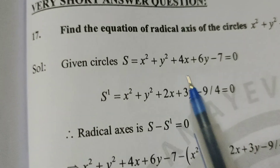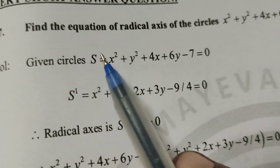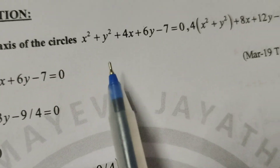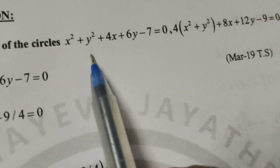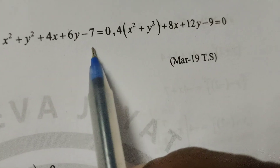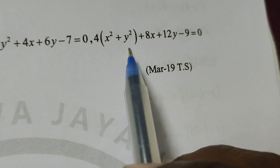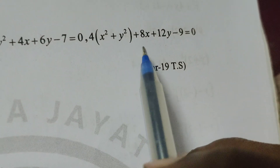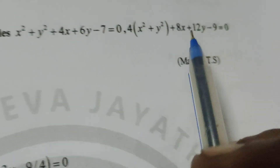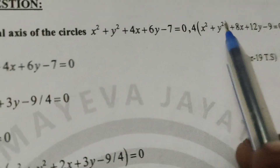This is Dr. Yuthi. Today we are going to explain: find the equation of the radical axis of the circles x² + y² + 4x + 6y - 7 = 0 and 4(x² + y²) + 8x + 12y - 9 = 0. In this given problem there are two circle equations, and we need to find the radical axis.